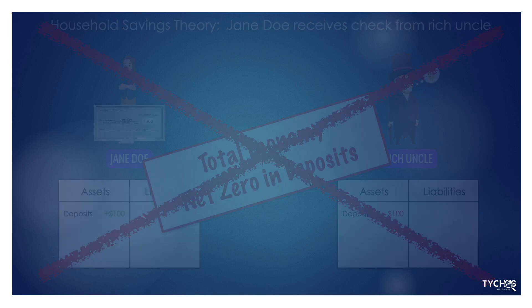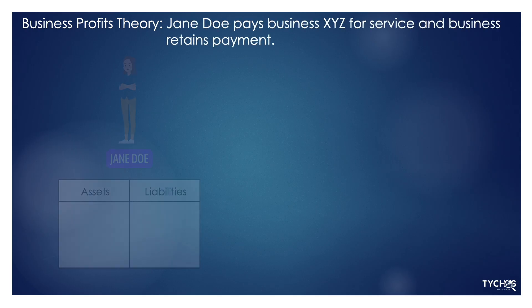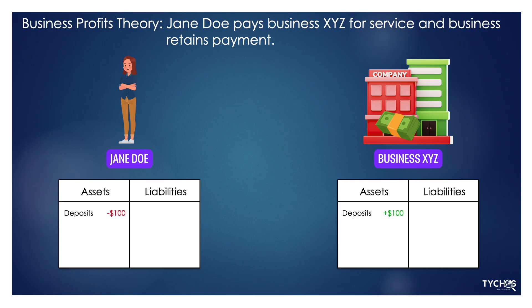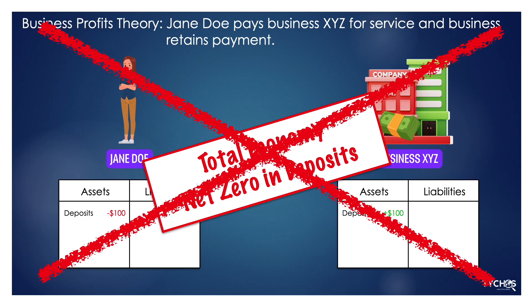Others have answered that those deposits come from profits that businesses retain. For example, as business XYZ gets paid for a service by Jane Doe and retains that payment, its deposits go up. But Jane Doe's deposits go down by that exact amount, so the amount of deposits in the system stays exactly the same. That's not the answer either.